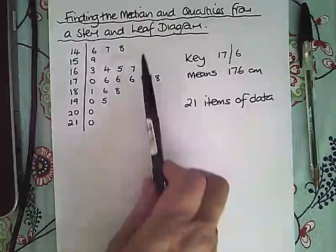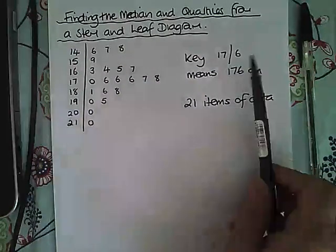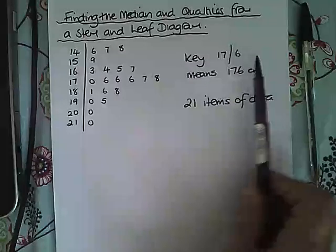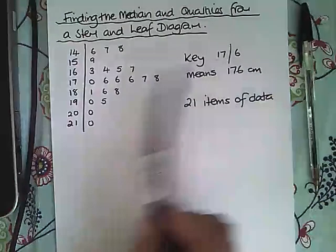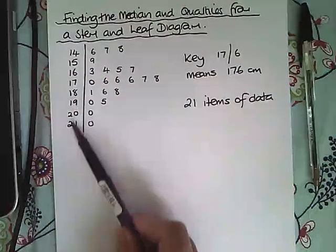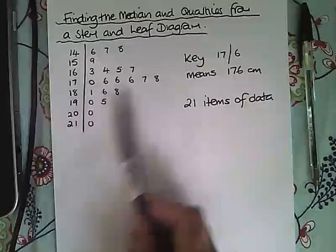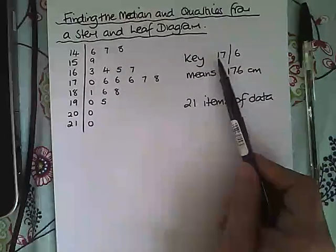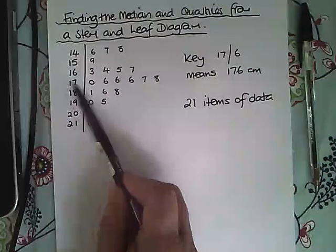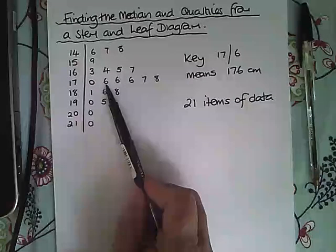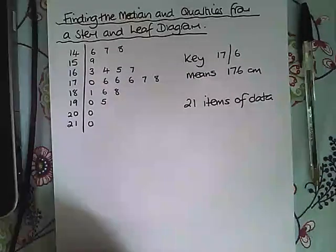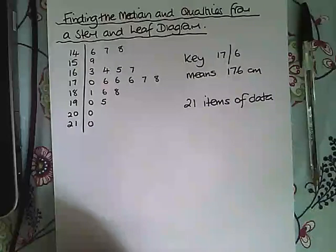So here we have a stem and leaf diagram and it has a key which is always essential. It tells us that this bit is our stem and these bits here are our leaves, and in this case the 1 and the 7 and the 6 correspond to a length of 176 centimeters.